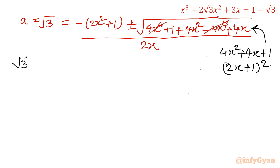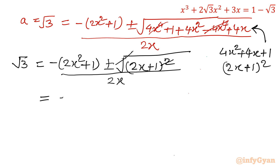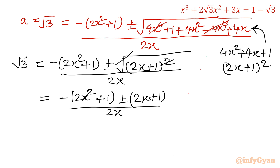So √3 = [−(2x² + 1) ± (2x + 1)] / 2x. Considering the plus sign: numerator becomes −2x² + 1 + 2x + 1 = −2x² + 2x + 2, giving (1 − x). With the minus sign: numerator gives −(x² + x + 1)/x.